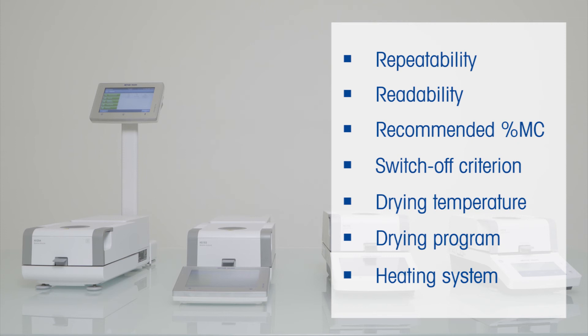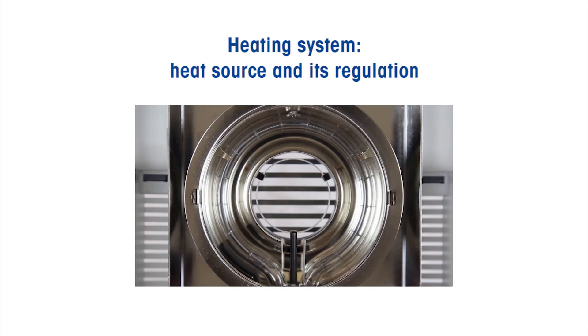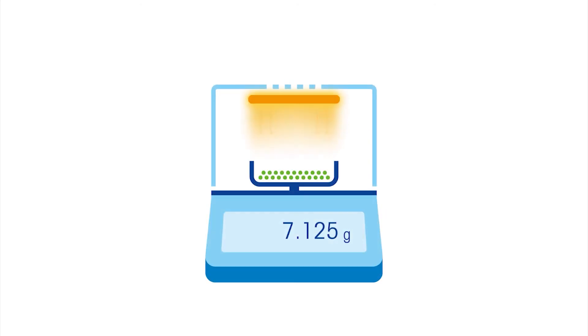The heating source together with its regulation are defined as heating system. In moisture analyzers, samples are usually heated by absorption of infrared radiation. Common sources of such radiation are halogen lamps, quartz lamps, and metal rods.